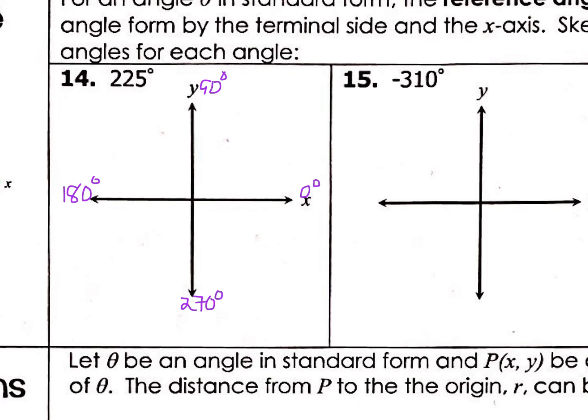Halfway in between 180 and 270 — this is 90 degrees from here to here, so it'd be 45. So 180 plus 45 is actually 225.